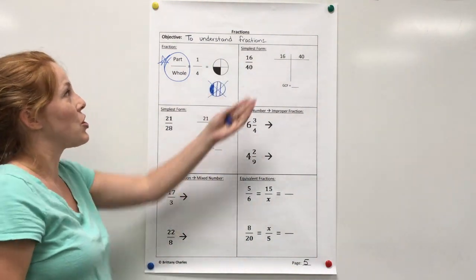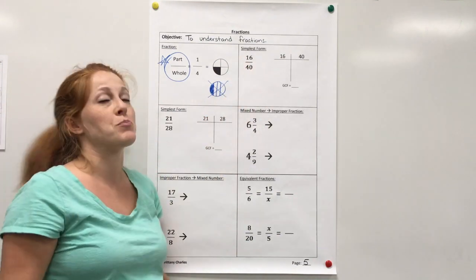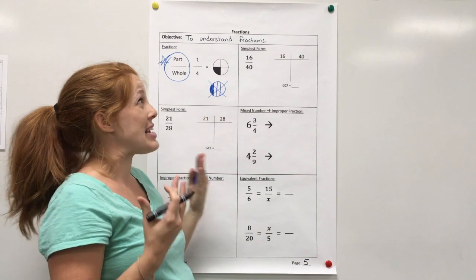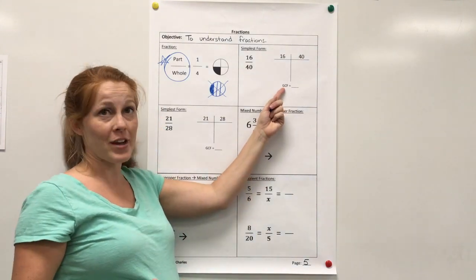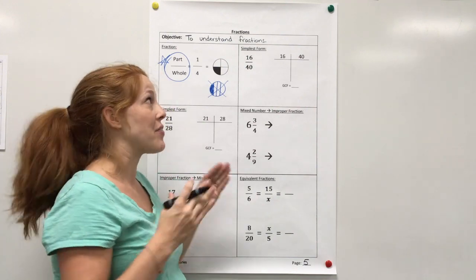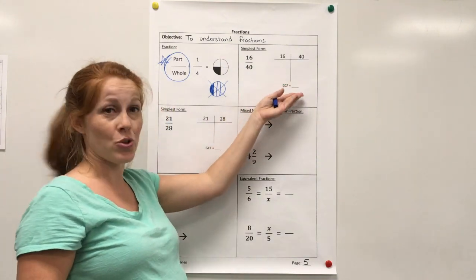Alright, so when you have a fraction, one thing you can do is put it in simplest form. To do that, the easiest way is to find the greatest common factor because that will let you simplify it in one step. Not the only way, but I'm going to go ahead and show you this first.